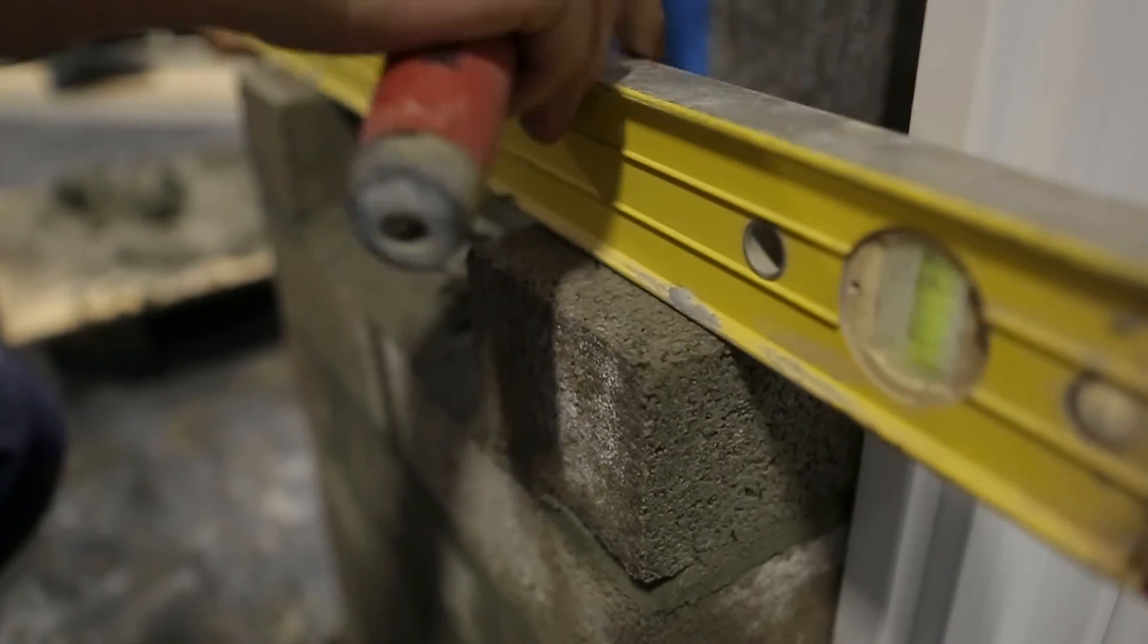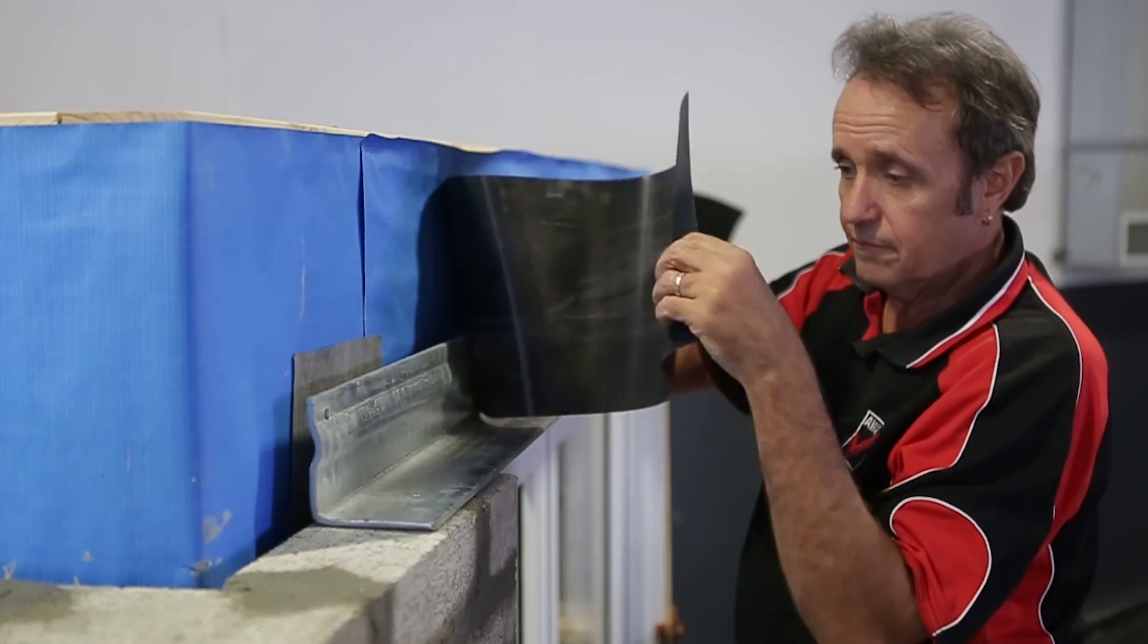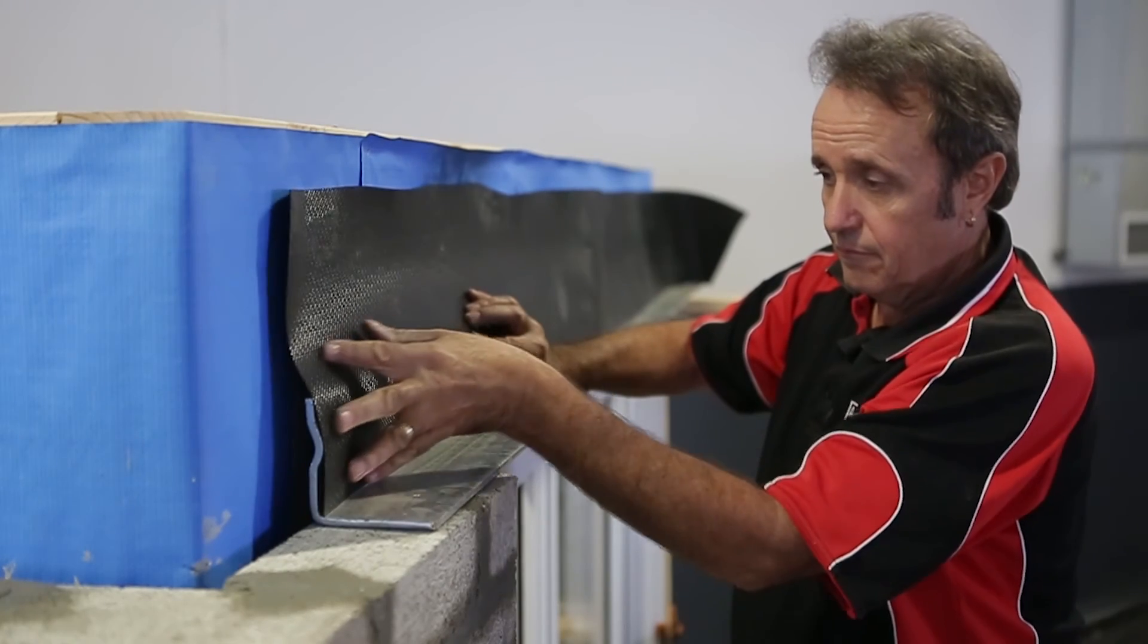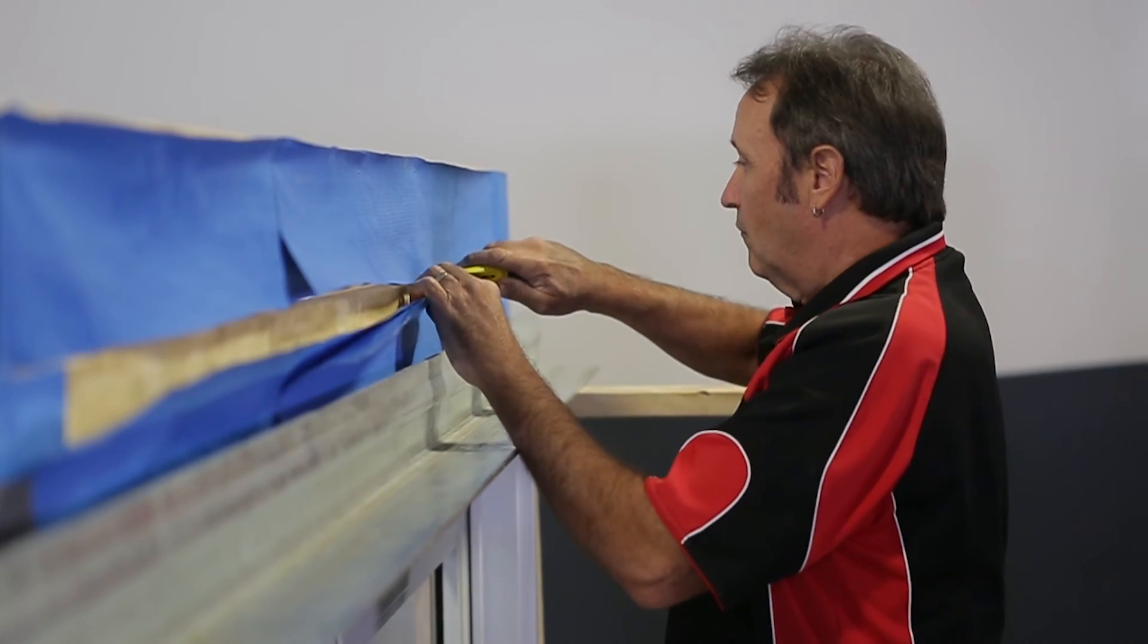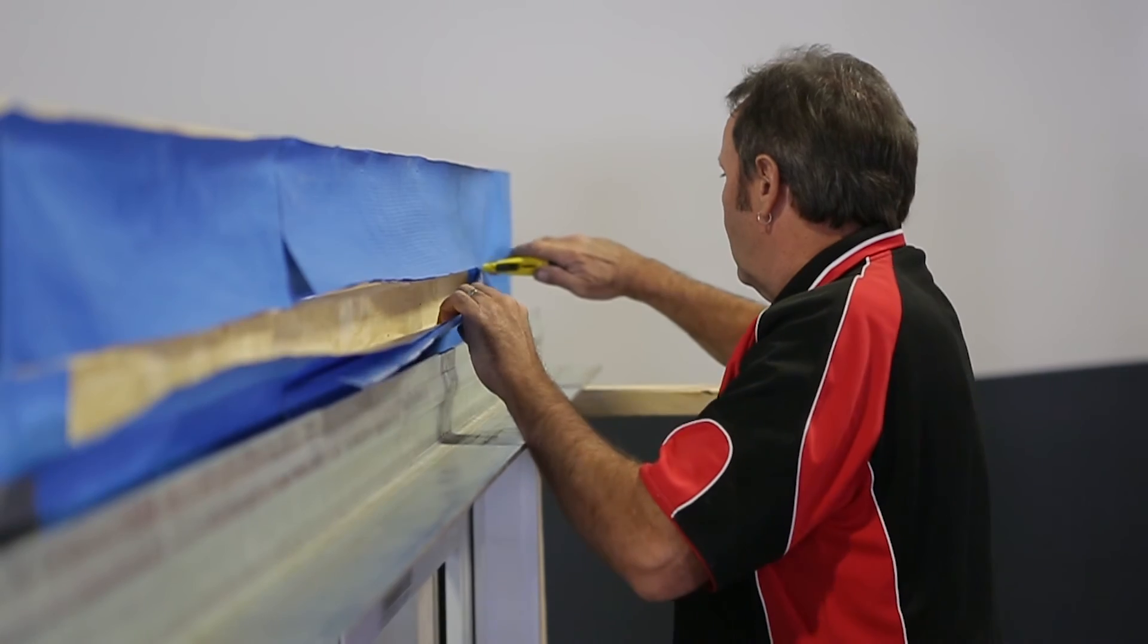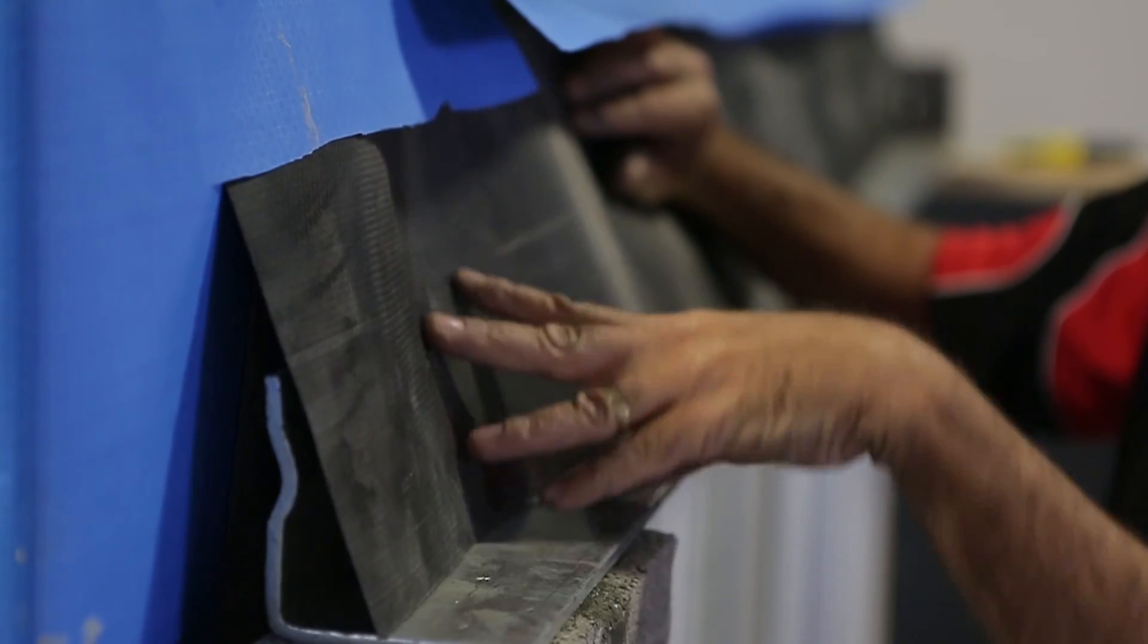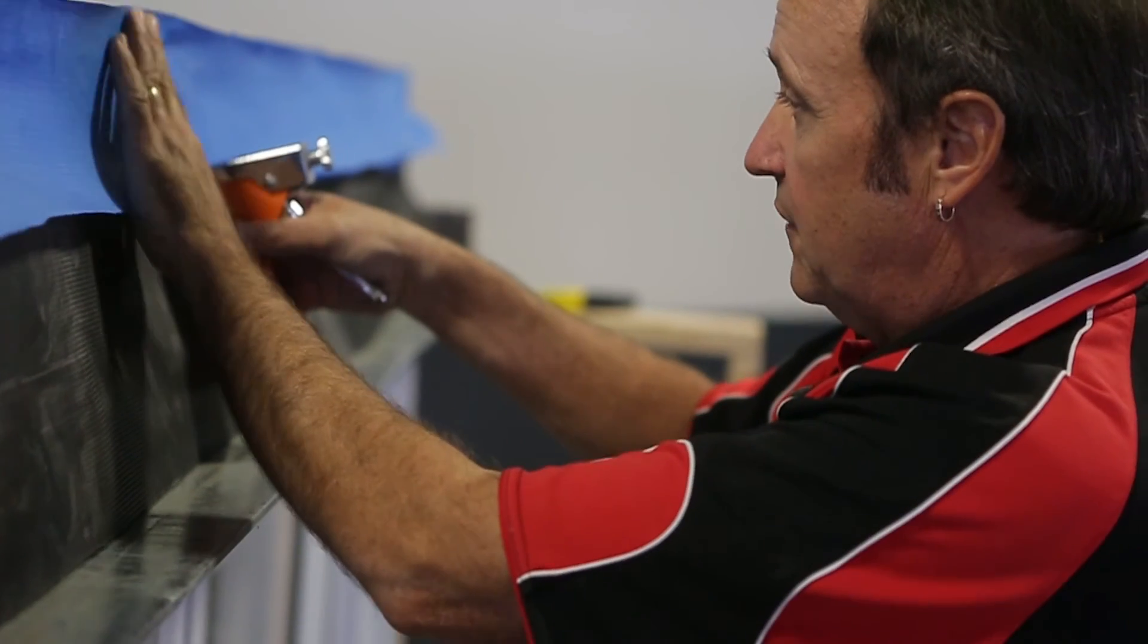The head flashing is laid into the lintel before the bricks are laid and the mortar joints will be left open for weep holes with no more than 1.2 meters between them. The top of the flashing goes behind the sarking so we'll need to cut a slit about 150 millimeters above the door that goes right across and about 150 millimeters past the opening on each side.